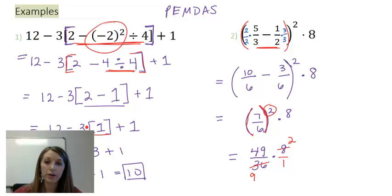Make sure I cannot reduce any more, which I can't. So I multiply straight across. 49 times 2 gives me 98, over 9 times 1, which gives me 9, which is my final answer.